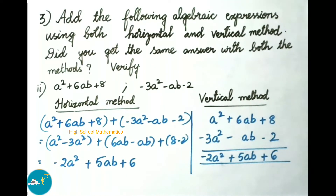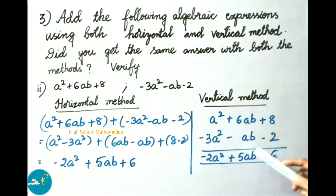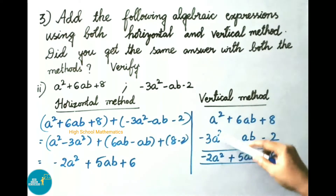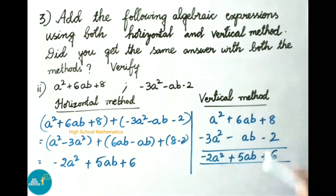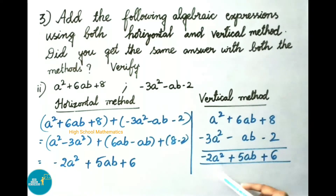Let us see the vertical method. Writing a square plus 6ab plus 8 and minus 3a square minus ab minus 2. For a square minus 3a square: both have opposite sign, so do subtraction and keep minus — 3a square minus a square is 2a square, giving minus 2a square. For 6ab minus ab: both have opposite sign, 6ab minus ab is 5ab. For 8 minus 2: subtraction gives 6. So the answer is minus 2a square plus 5ab plus 6. In both methods we got the same answer.